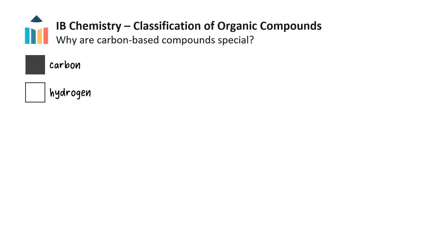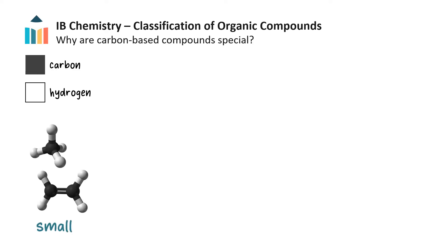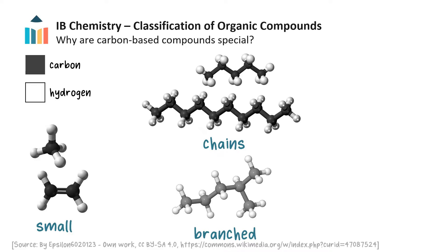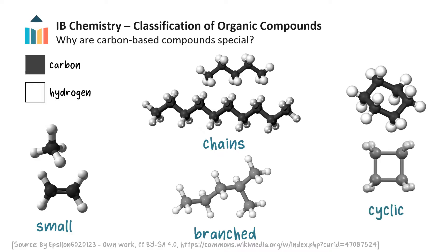Let's briefly investigate how organic compounds come in a variety of bonding arrangements, using black to represent carbon atoms and white to represent hydrogen atoms. Organic molecules can be small, or many carbon atoms can bond in a row, forming chains. They can be branched, or even cyclic, and there are even cage-like organic structures, but we won't investigate those here.